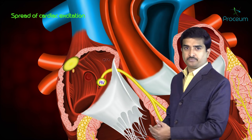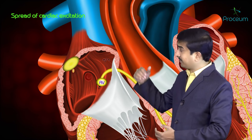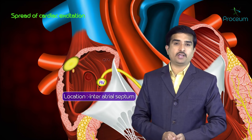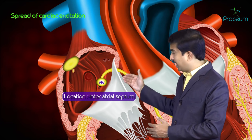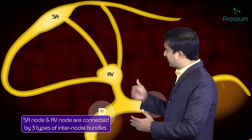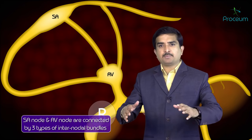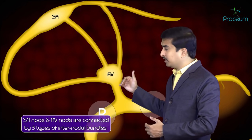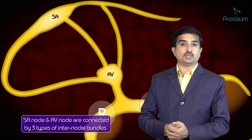The next structure is the AV node, also called the atrioventricular node, while SA stands for sinoatrial node. The AV node lies at or near the inter-atrial septum. The SA node and AV node are connected by three types of fibers called internodal fibers. Depending on their location, these are divided into three types.